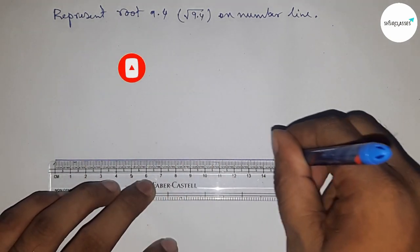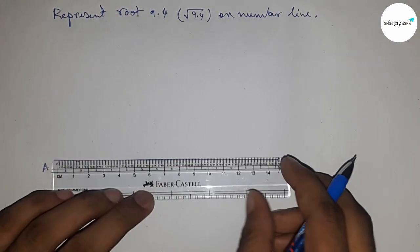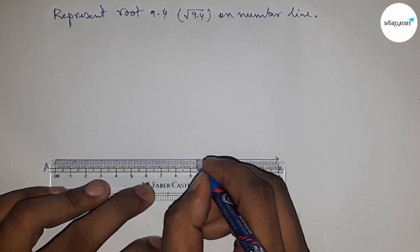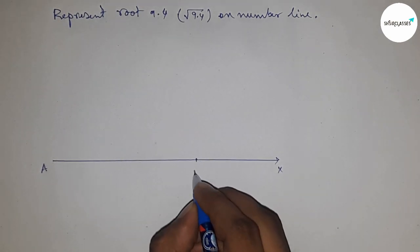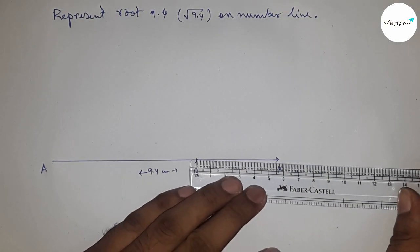First, draw a line of any length. This is the AX line. Next, take 9.4 centimeters using a scale. This is point B, so AB equals 9.4 centimeters.